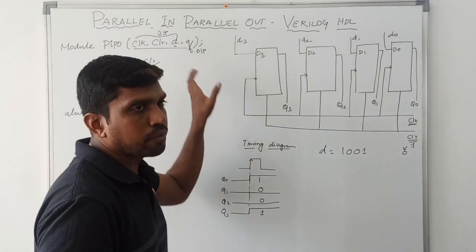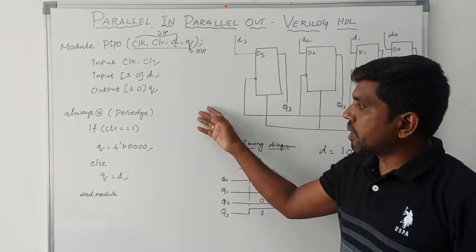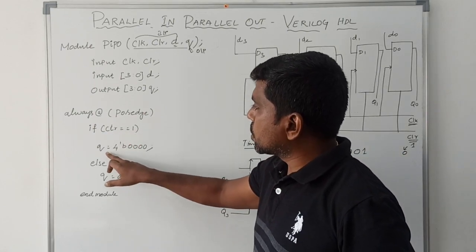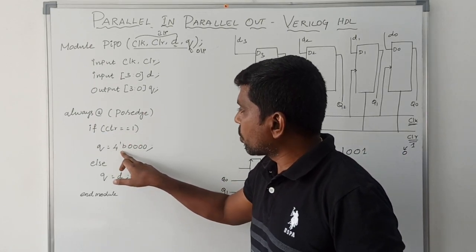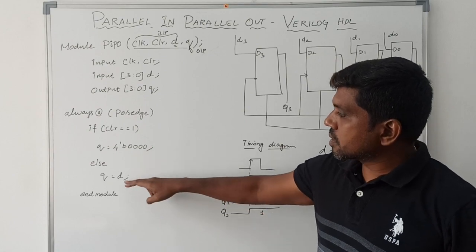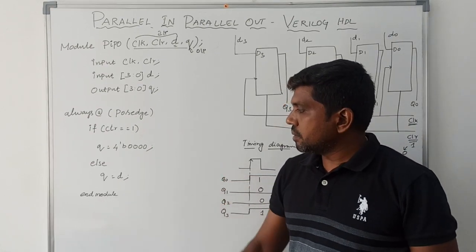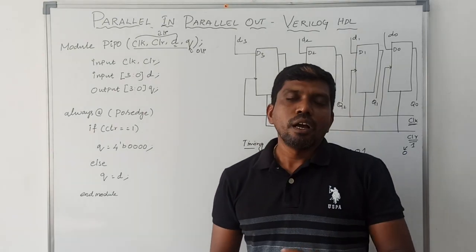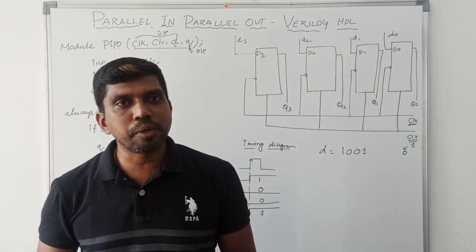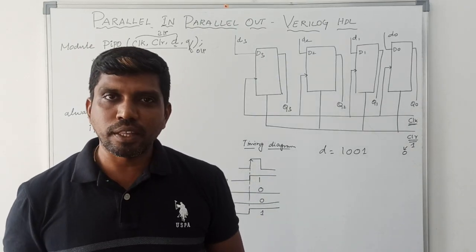First declare the input variables, then assign input and output variables. If clear equals 1, Q equals 4'b0000. Else, Q equals D. Finally, endmodule. I hope you understand the concept very well. If you are watching for the first time, kindly subscribe and support us. Thanks for watching my channel.